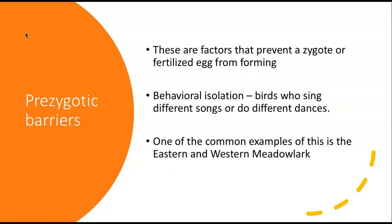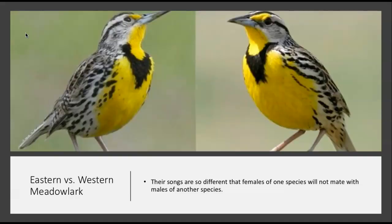Prezygotic barriers are factors that prevent the zygote from ever forming. One type is behavioral isolation — birds that sing different songs or do different dances, where a female of one species is only attracted to that song or dance. A common example is the eastern and western meadowlark. These birds look virtually identical — it is basically impossible to tell them apart with the naked eye — but genetically they are completely different. They have developed different songs, and those songs are so distinct that females of one species will absolutely not mate with males of the other. That is behavioral isolation.